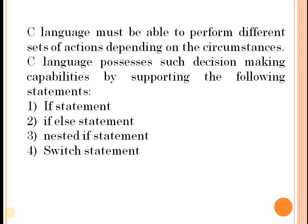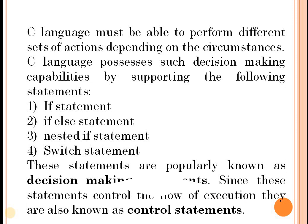Till now we have seen all sequential programs, where all the statements are executed in a sequence. There may be some programs in which we require to execute one group of statements in some condition and another group of statements in some other condition. For that we are going to require these control statements, which are popularly known as decision-making statements. Because depending upon the decision, the flow of execution will change — and since these statements control the flow of execution, they are also known as control statements.